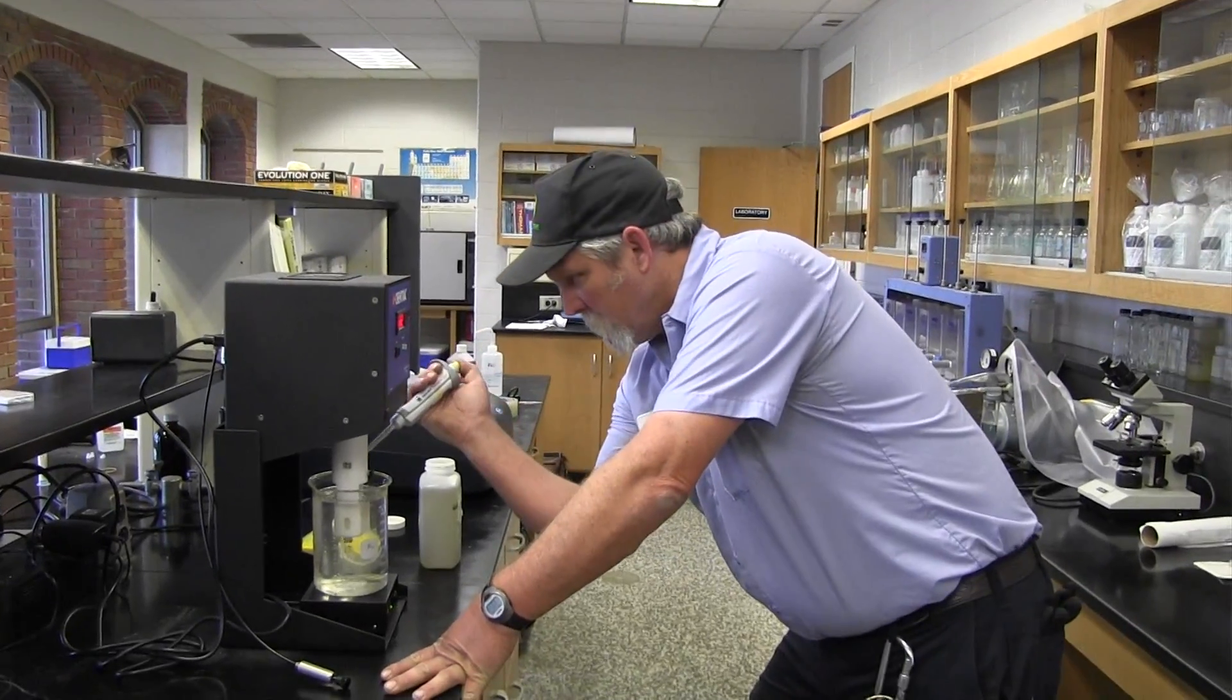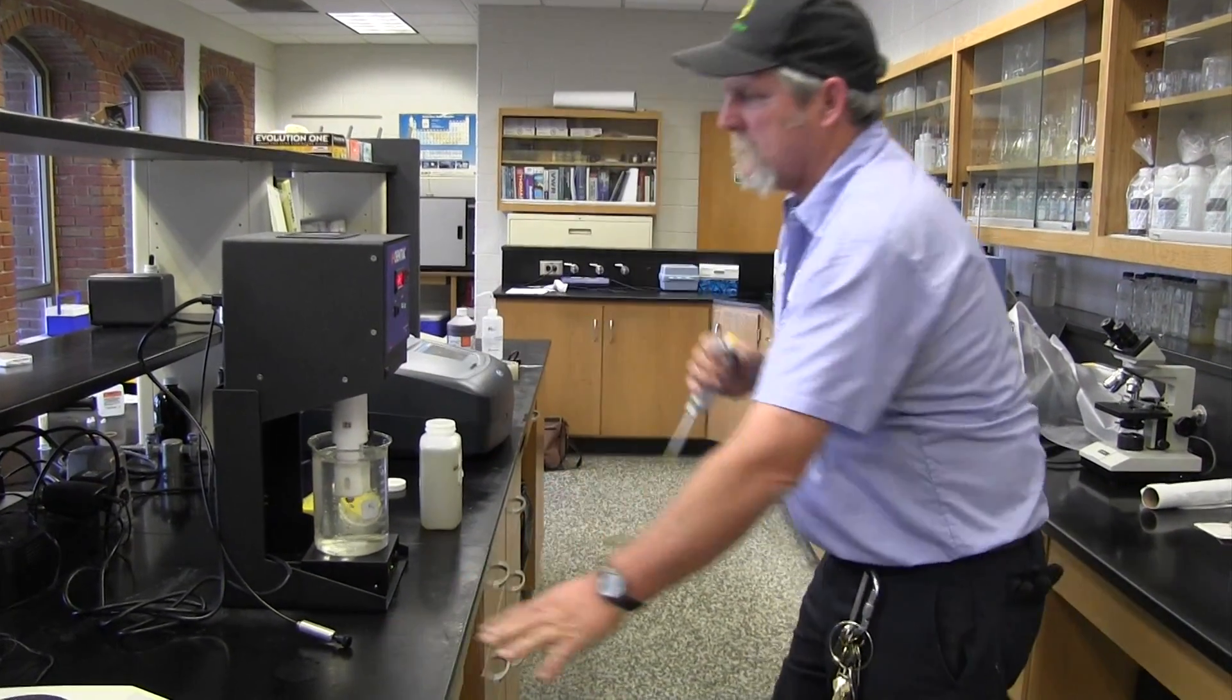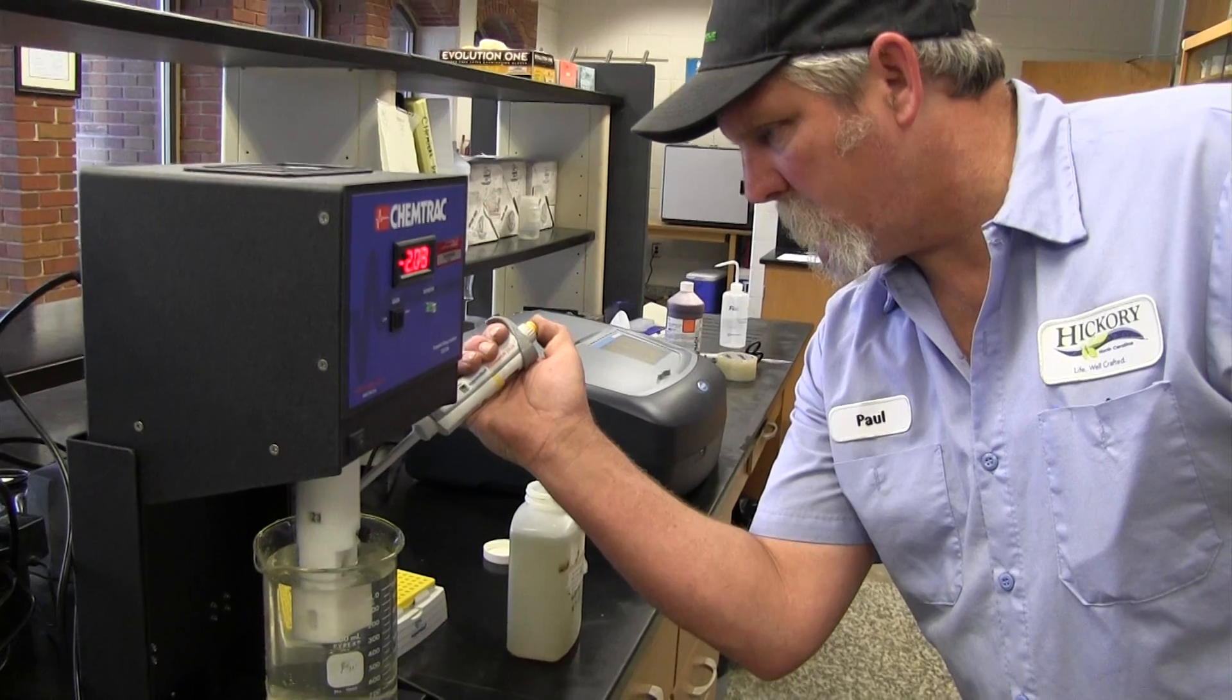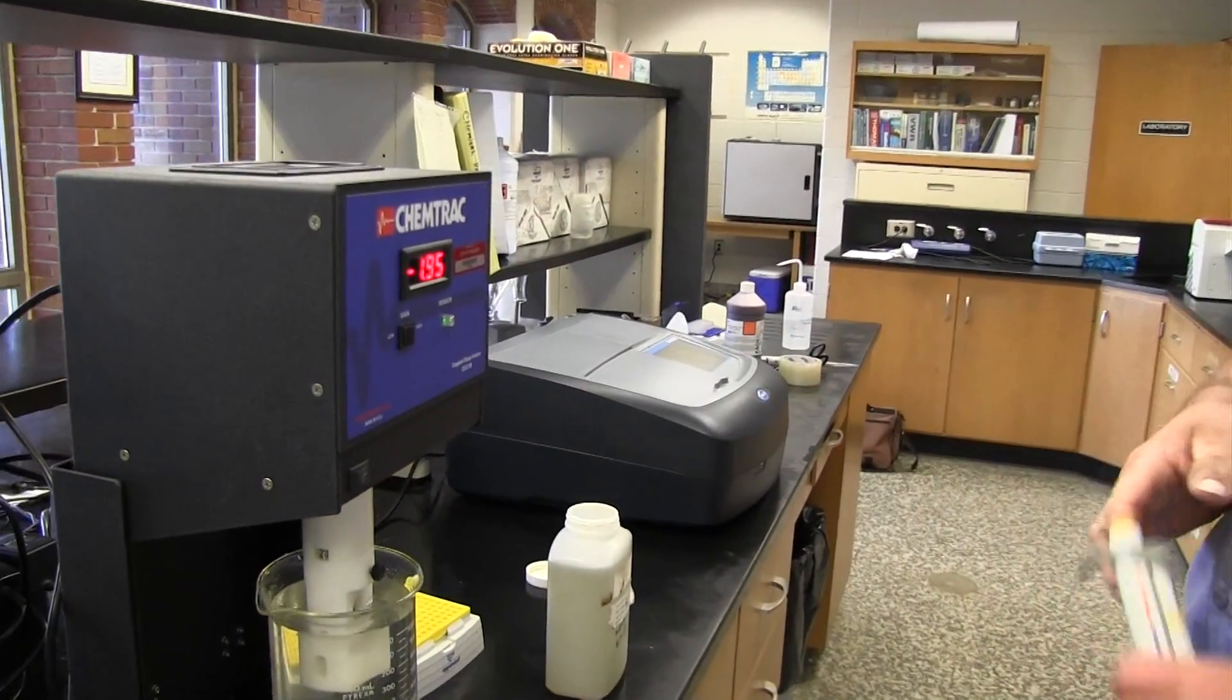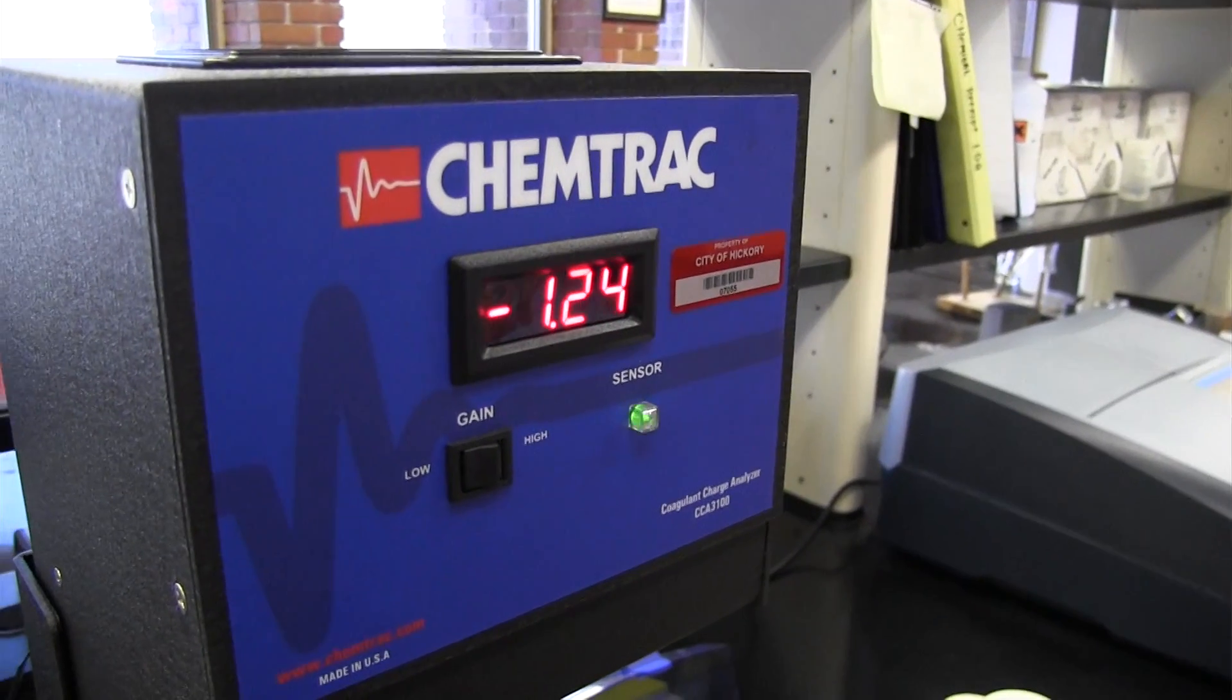The coag analyzer helped us reduce our time and, of course, time equates out into money. It's a very simple method. It's very easy. You collect your sample. You have one jar. You titrate down to your end point that you want to achieve with your coag analyzer and then you have your answer.